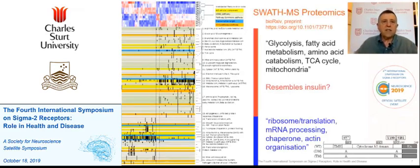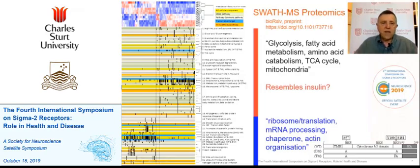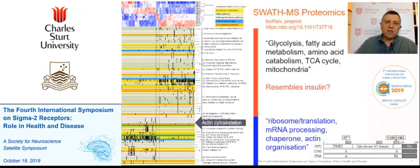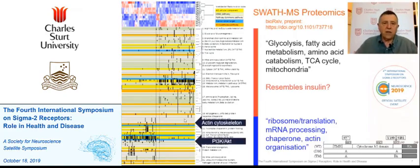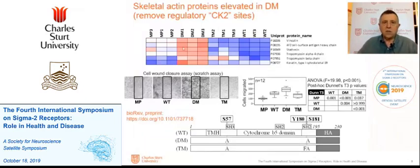Here we can see a proteomics analysis — there's a heat map at the top and a pathways map. These red pathways look like energy metabolism, and the blue pathways at the bottom look like ribosome translation, messenger RNA processing, chaperone-related processes, and similar. I'll draw your attention to two of those pathways: actin cytoskeleton and PI3 kinase.